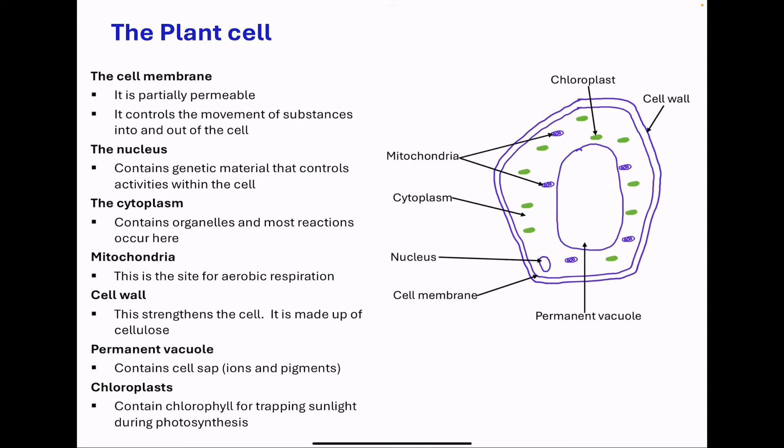Moving on to the plant cell, this is the example we see here. The plant cell is made up of a cell membrane. This is partially permeable, and it controls the movement of substances into and out of the cell. Then we go to the nucleus. It contains genetic information, and the DNA controls the reactions that take place within the cell, reactions like protein synthesis, and so on.